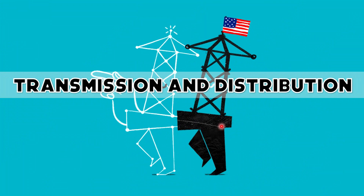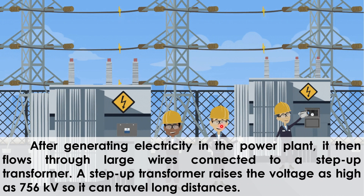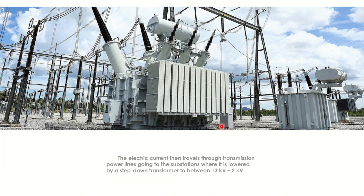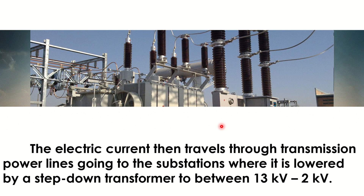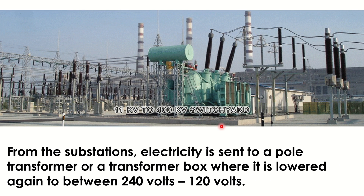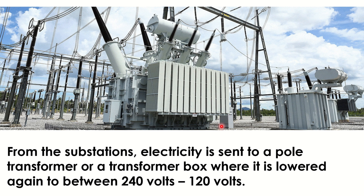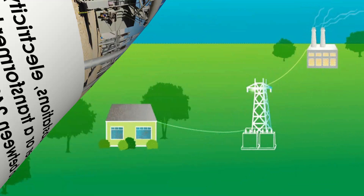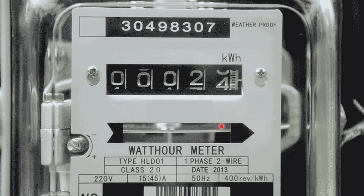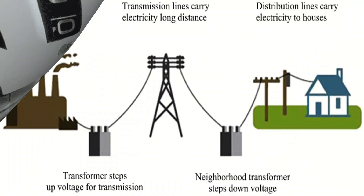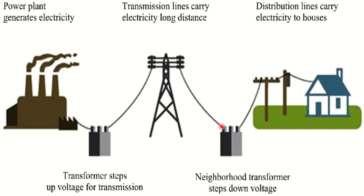Next is transmission and distribution. How does electricity reach you? After generating electricity in the power plant, it flows through large wires connected to a step-up transformer. A step-up transformer raises the voltage as high as 756 kilovolts so it can travel long distances. The electric current then travels through transmission power lines going to substations, where it is lowered by a step-down transformer to between 2 kilovolts and 13 kilovolts. From substations, electricity is sent to a pole transformer where it is lowered again to between 120 volts and 240 volts. It is from here where electricity comes into your home through a service box where your electric meter is located. Look at the photo showing the generation, transmission, and distribution of electricity.